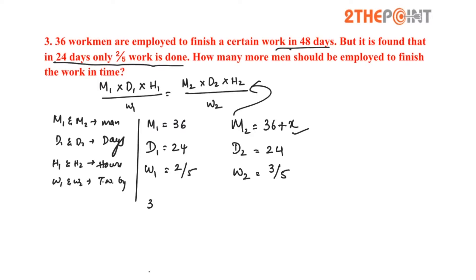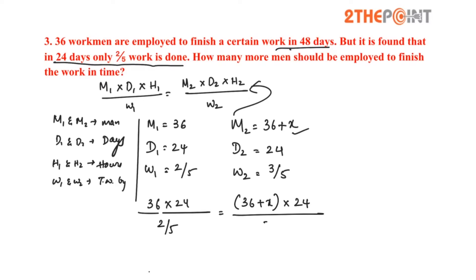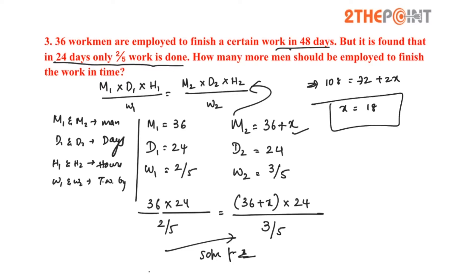Substituting values in the formula: 36 into 24. We don't have hours, so no need to worry about it — if one is present the other will not be there. Work W1 is 2/5, which equals (36 + x) into 24, divided by W2 which is 3/5. Simplifying the equation and solving for x, we get 108 equals 72 plus 2x, therefore x equals 18. So 18 more men should be employed to finish the work in time.